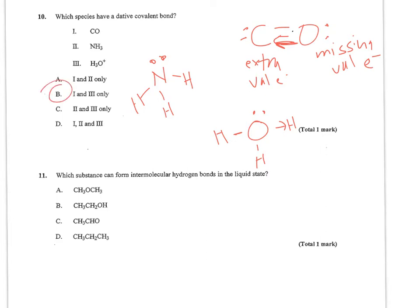Number 11 wants to know which substance can form intermolecular hydrogen bonds in the liquid state. When you look at A, you should realize that the O is going to be sandwiched between the two CH3 or methyl groups. So that's not a hydrogen bond. CH3CH2OH, that is a hydrogen bond.